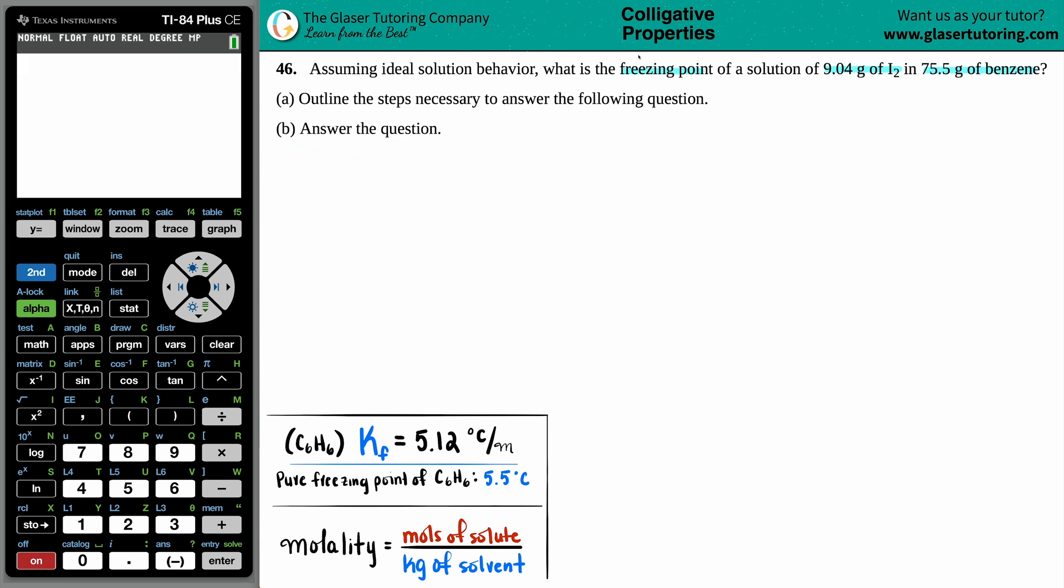Okay, so freezing points of solutions. Keep in mind that with solutions there's always two components. There's your solutes and your solvents. We need to figure out out of these two, the I2 and the benzene, which one is your solute and which one is your solvent.